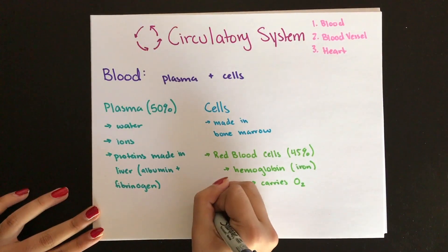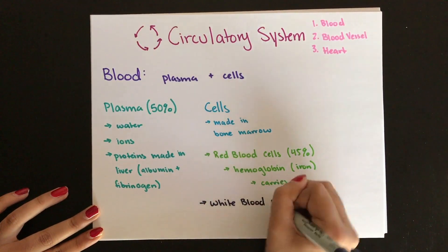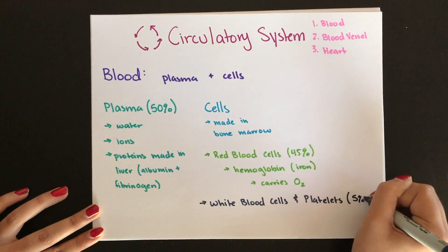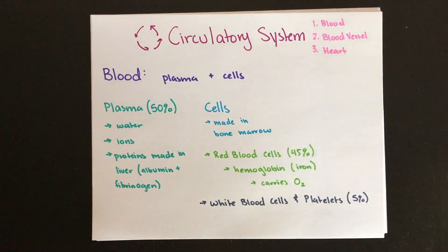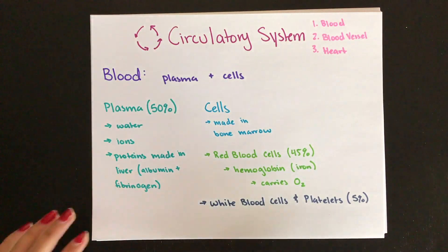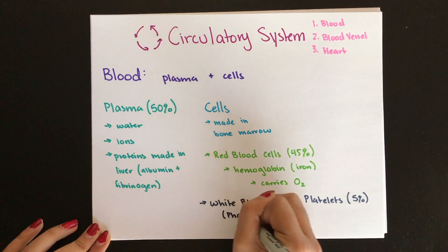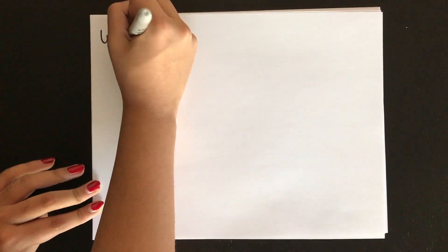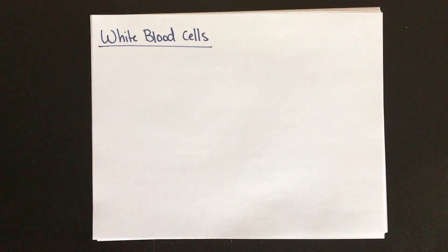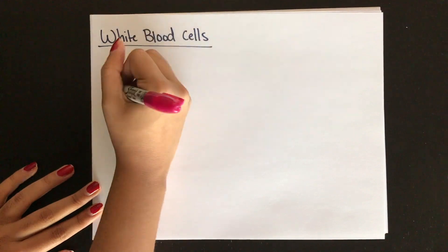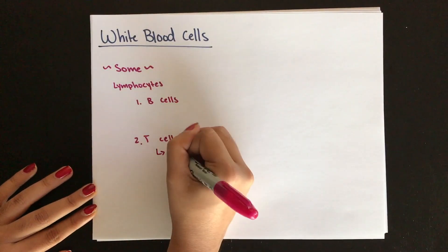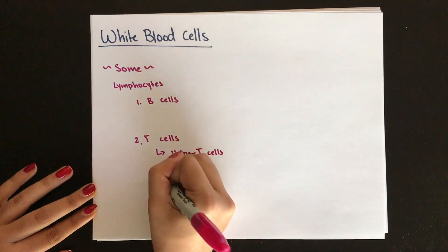Because plasma takes up 50% and red blood cells take up 45%, we have a remaining 5% made up of white blood cells and platelets. White blood cells are phagocytes that participate in immunity, and platelets are cell fragments important in blood clotting. Some white blood cells are called lymphocytes, divided into B cells and T cells. T cells are further divided into helper and killer T cells.